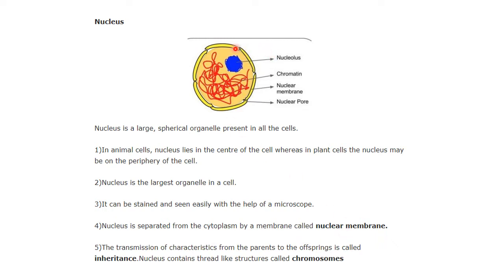The nucleus contains an outer membrane, which is why it is separated from the cytoplasm by the nuclear membrane. This envelope separates the nucleus from the cytoplasm.